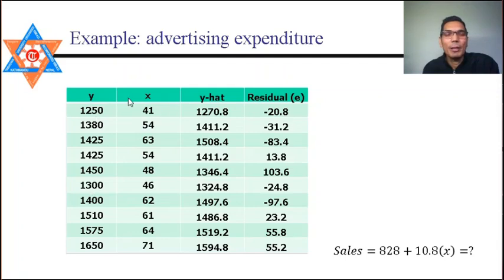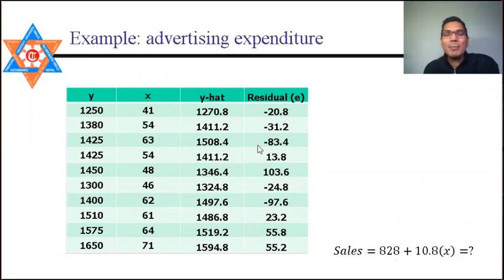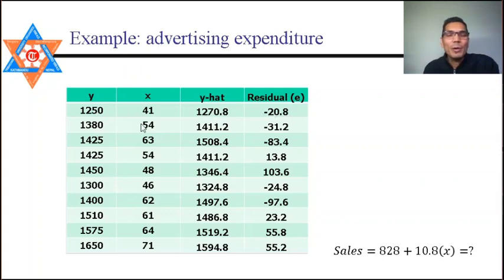Using the regression equation ŷ = 828 + 10.8x from the previous example, if x = 41, we get ŷ = 1270.8. The actual observed value is 1250, but the estimated value is 1270.8, so the residual is −20.8. This error term has a significant role in assessing whether the model is good.